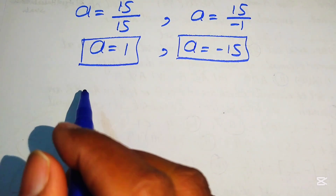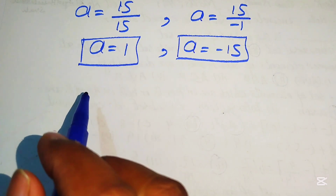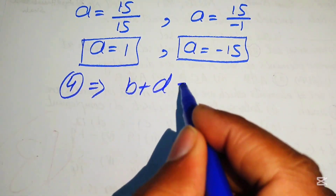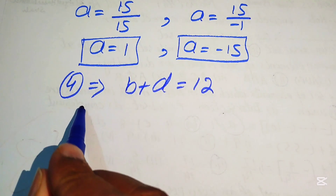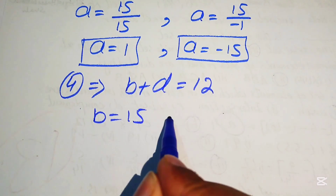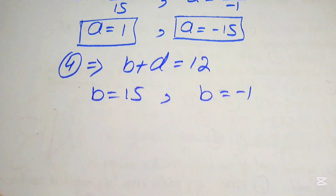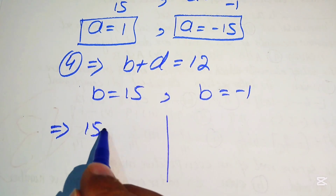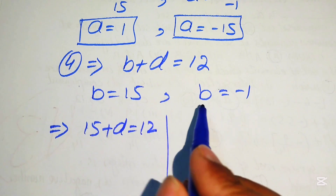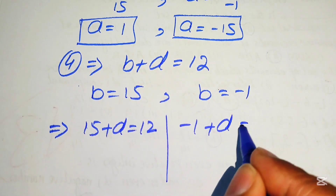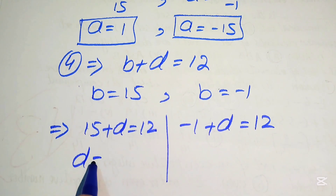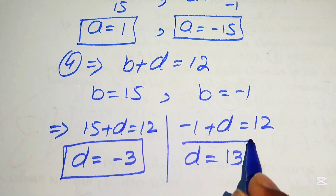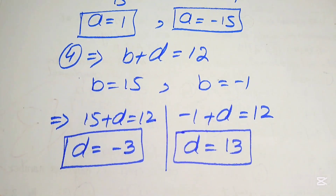To find D, we use equation 4: B plus D equals 12. Substituting B equals 15 gives 15 plus D equals 12, so D equals minus 3. Substituting B equals minus 1 gives minus 1 plus D equals 12, so D equals 13.